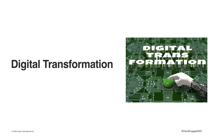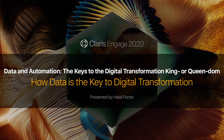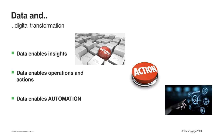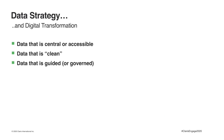We talked about what digital transformation is. Next we'll talk about how data is the key. Digital transformation has a big data component — but why? Data enables insights, operations, actions, and automation. But before you start thinking of the exciting things you can do with your data, you need to get your data house in order. To digitally transform, you need a data strategy.